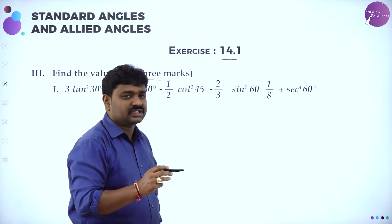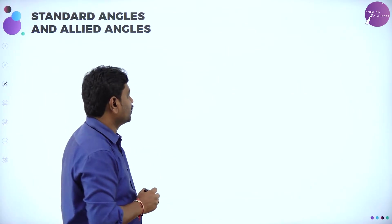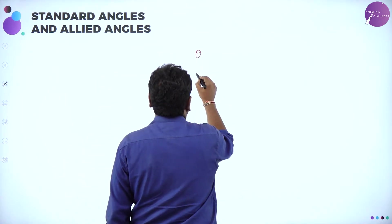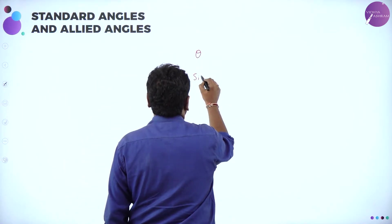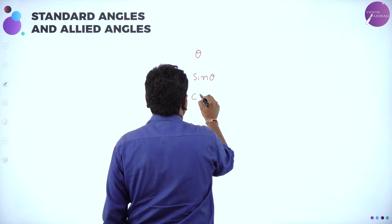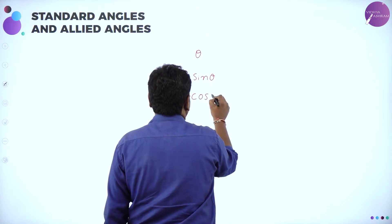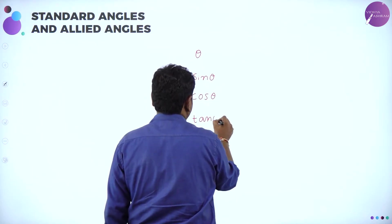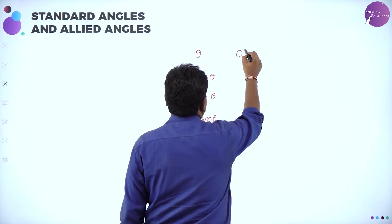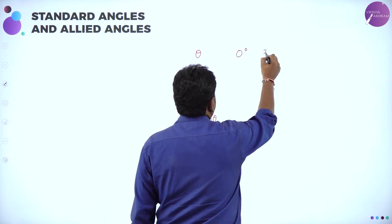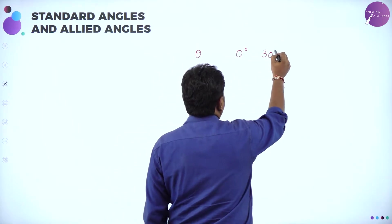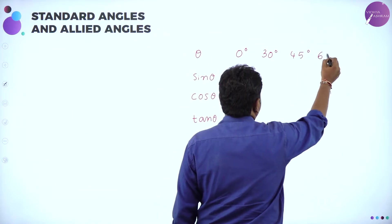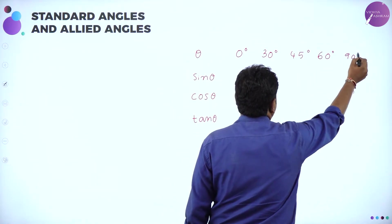In order to solve this, first you should be thorough with the angle table. The table has theta, sin θ, cos θ, tan θ — and you know the reciprocals. If you know these three, you can reciprocate. The angles are: 0°, 30°, 45°, 60°, and 90°.